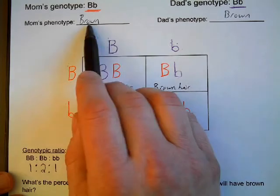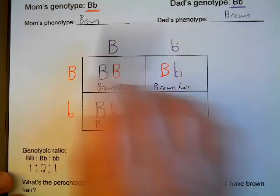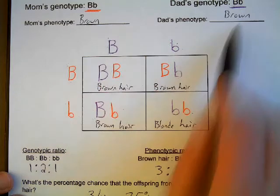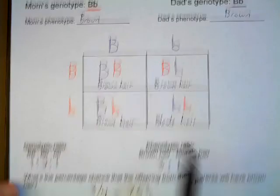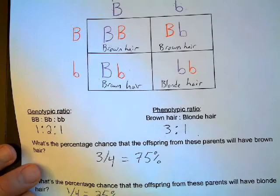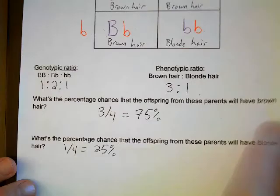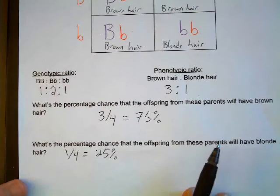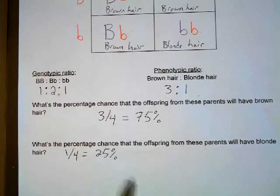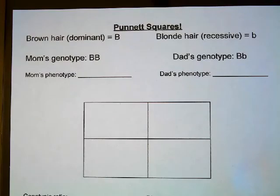So we got all that information from this Punnett square: the genotypic ratio, the phenotypic ratio, the 75% chance of brown hair, and the 25% chance of blonde hair. This also shows how even though the parents show the dominant trait of brown hair, they can still have a child with blonde hair — even though it's only a 25% chance. I hope this helps. Let me know or let your teacher know if you have any questions. Here's another example of using a Punnett square.